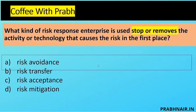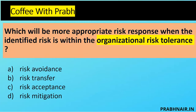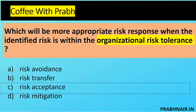Next question: which risk response is most appropriate when the identified risk is within the organization's risk tolerance? Risk avoidance applies when risk is beyond capacity. Transfer involves investing in controls. Mitigation means implementing controls to reduce risk. But the question itself says the identified risk is within the organization's risk tolerance — so we accept that risk which is below the appetite or within tolerable levels. The answer is C, risk acceptance.